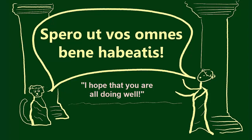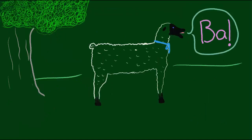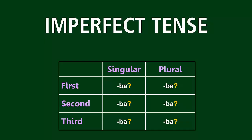Do you remember what we talked about last time? That's right, we talked about sheep. Or, slightly more accurately, we talked about the imperfect tense endings.